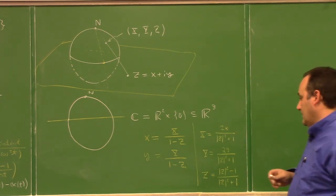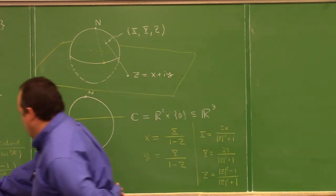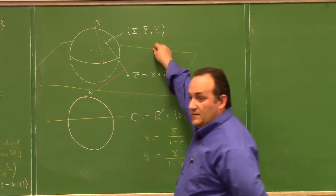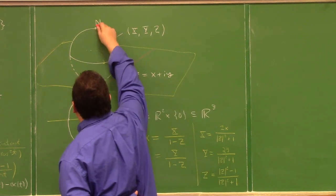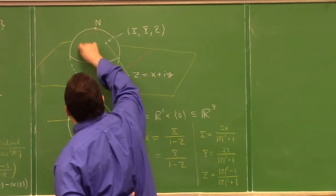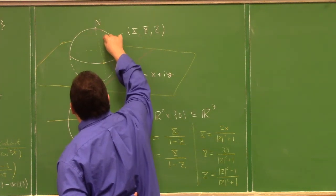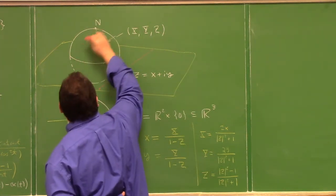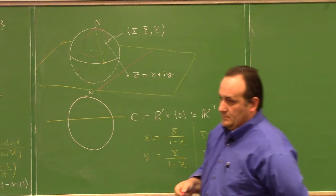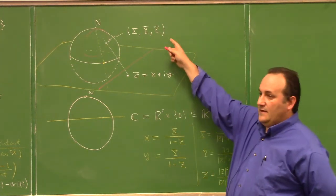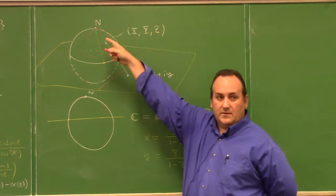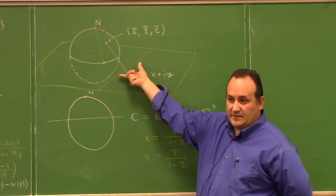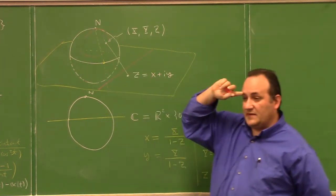If I studied a line in the complex plane, it would end up giving you some kind of circle on the sphere. That circle would go through the north pole, because the line goes to infinity and that point at infinity gets mapped to the north pole.